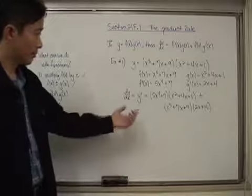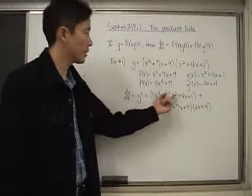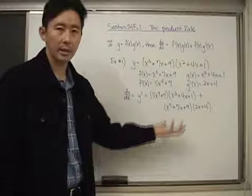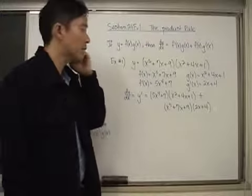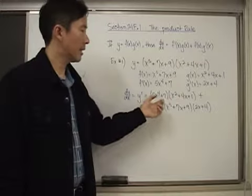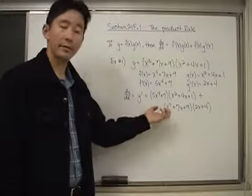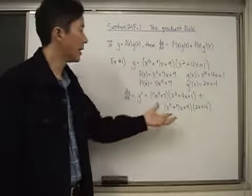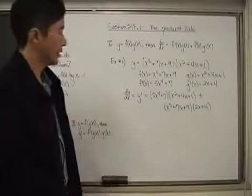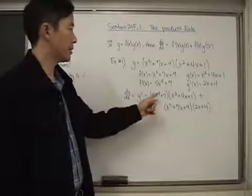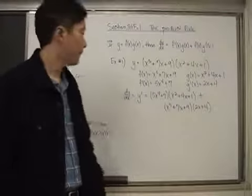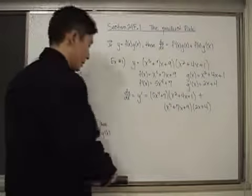That's how you find the derivative of a product of two functions. If needed, you would distribute and collect like terms. An important thing to remember for later is that often we'll need to look for common factors we can pull out to simplify the expression more easily. For now, the key goal is just to be able to produce the derivative.